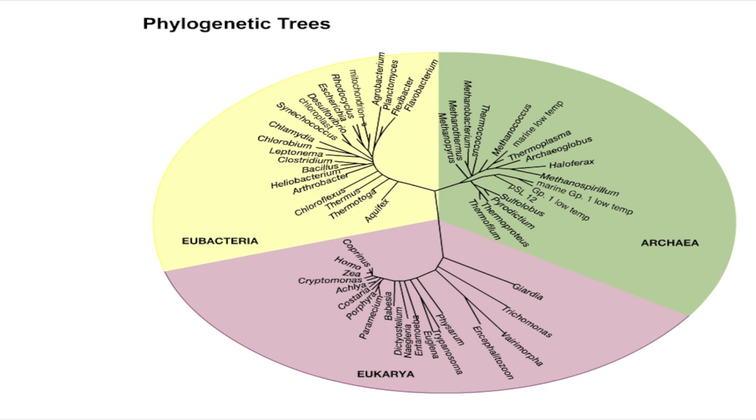In theory, one should be able to construct a phylogenetic tree describing the relationship between every organism that has ever lived. In practice, however, phylogenetic trees are generally constructed to show the relationships between a limited number of organisms.